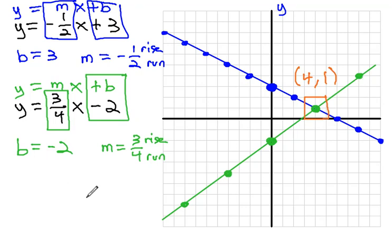This tells us that that point 4, 1 works both on the green line and the blue line, or works in both equations. 4 comma 1 is going to be our solution for this system of equations. When x is 4 and y is 1, both of these equations become true equations.